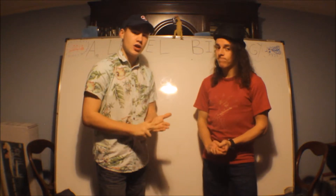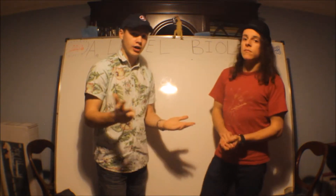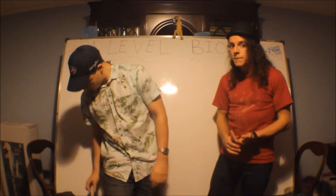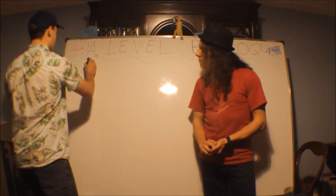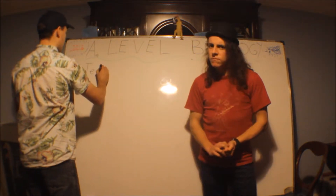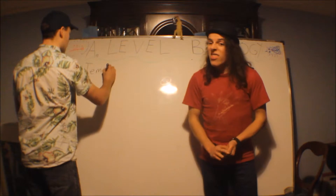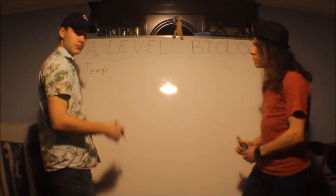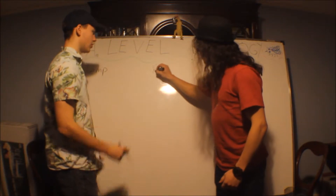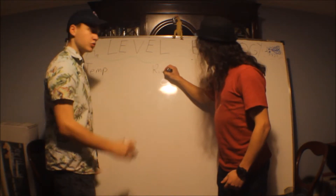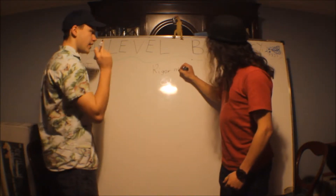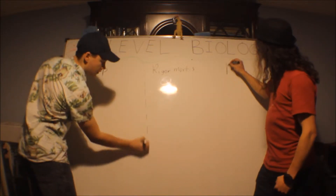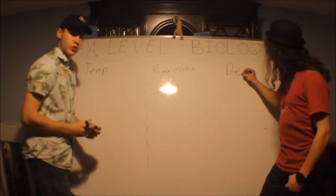There are three main ways to determine when someone died. Early on, there's the temperature of the body. Then what stage of rigor mortis they are in — rigor mortis has a few steps we'll go through in a second. And then there's decomposition at the other end. So we'll divide them into three main types and talk about them.